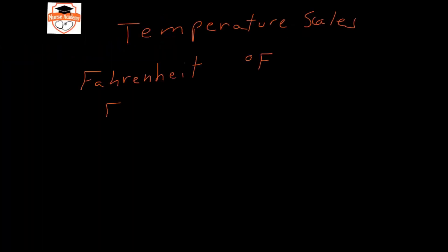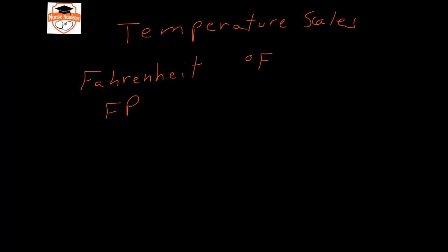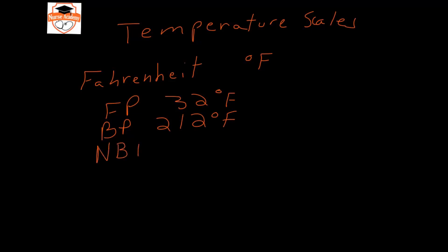The freezing point of water in Fahrenheit is 32 degrees Fahrenheit. The boiling point of water is 212 degrees Fahrenheit, and normal human body temperature — what we usually think of as normal — is 98.6 degrees Fahrenheit.